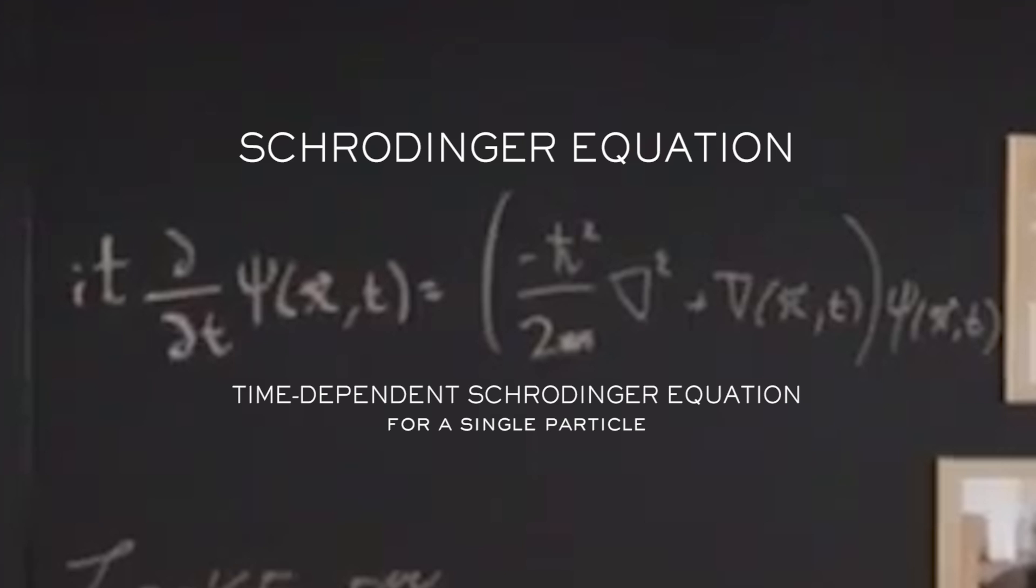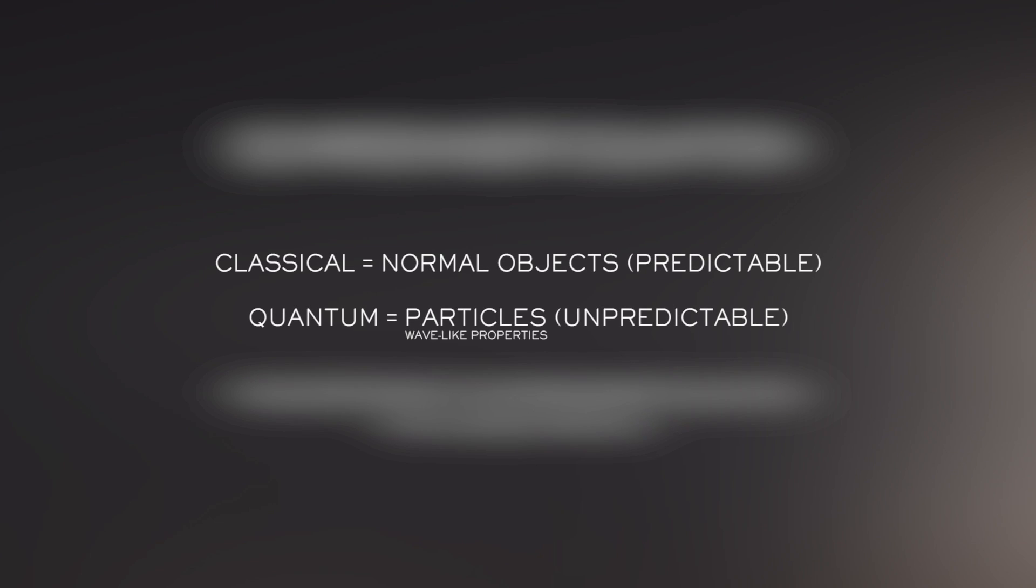With normal objects, if you know all the conditions of a certain situation or experiment, it's possible to precisely measure all of the object's behaviors. How an object falls, how an object swings, how an object bounces, how an object breaks. All of these things can be defined in a very precise manner because normal physical objects act predictably. That's not the case for particles. The main reason for this is because particles have wave-like properties. As a result, particles are constantly moving, zipping around, and doing all kinds of crazy things, making them much more unpredictable.